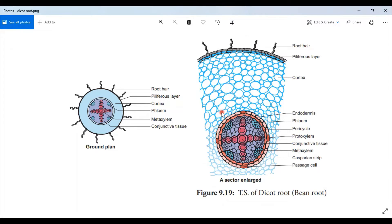Hello everyone, in today's video we will study about the structure of a dicot root. This is the transverse section of a dicot root.